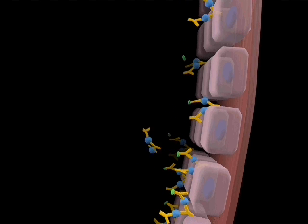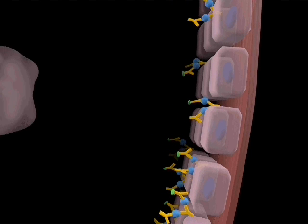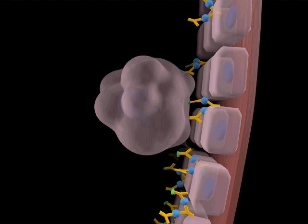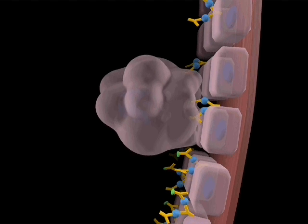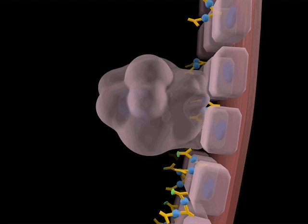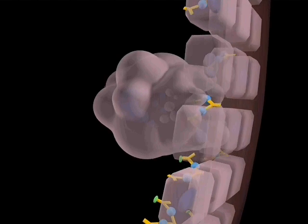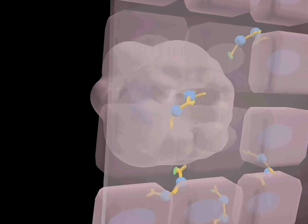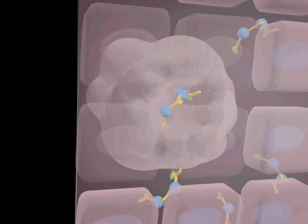Macrophages then attempt to phagocytose these complexes as they would bacteria. As these complexes are deposited on the basement membrane, the macrophages are unable to extend their pseudopodia around them. The macrophages then degranulate, releasing destructive lysosomal enzymes into the gap, damaging the basement membrane. This process is known as frustrated phagocytosis.